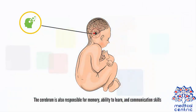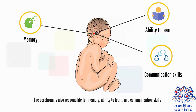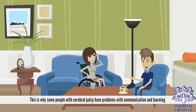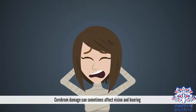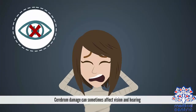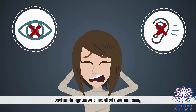The cerebrum is also responsible for memory, ability to learn, and communication skills. This is why some people with cerebral palsy have problems with communication and learning. Cerebrum damage can sometimes also affect vision and hearing.